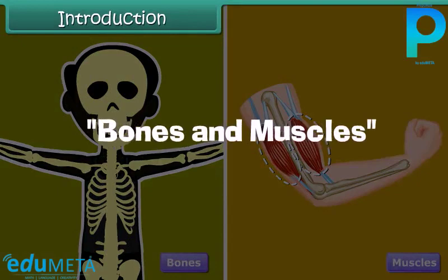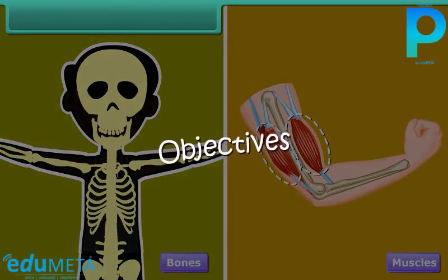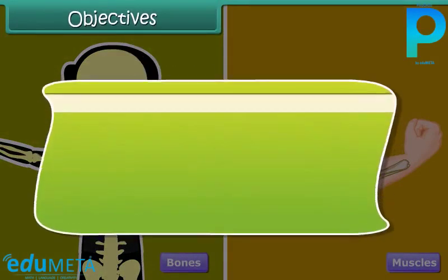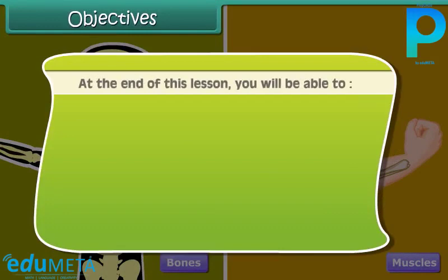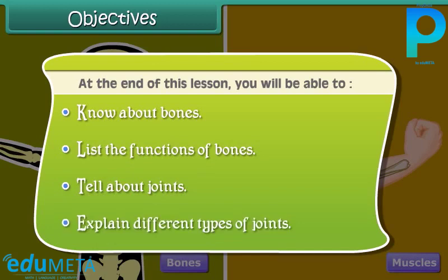Bones and muscles. Objectives: At the end of this lesson, you will be able to know about bones, list the functions of bones, tell about joints, and explain different types of joints.